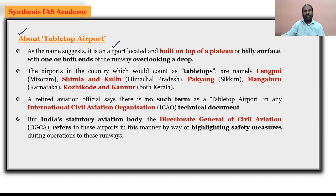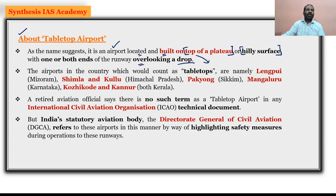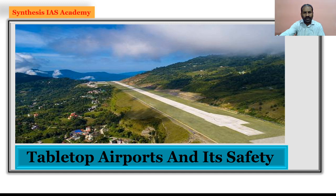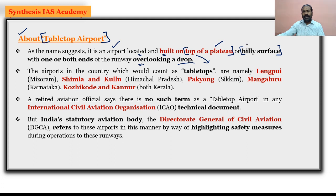An airport which is located or built on the top of a plateau or on a hilly surface, where the runway on both ends overlooks a drop, is called a tabletop airport. This is a plateau wherein you have the runway, and the other side has a slight slope. These kinds of airports are referred to as tabletop airports.